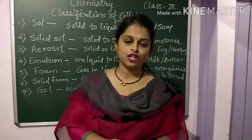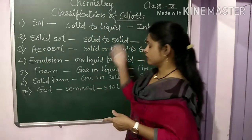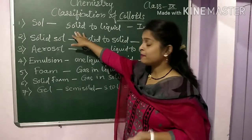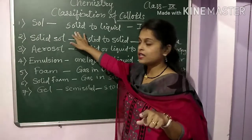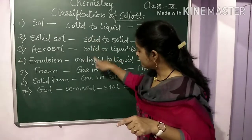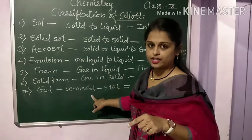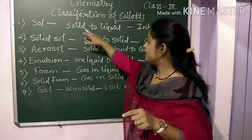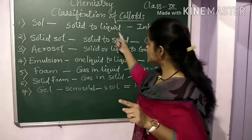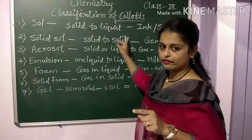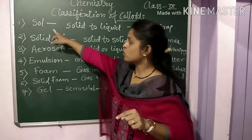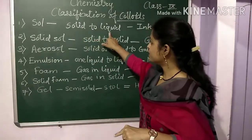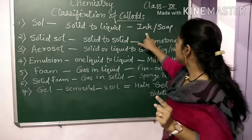So colloid is an intermediate between solution and suspension. Now there are some classifications of colloids. The first is sol. Sol contains tiny solid particles dispersed in a liquid — the solid is the dispersed particle, which is the solute part, and the liquid is the dispersion medium, which is the solvent. Examples of sol are ink and soap.